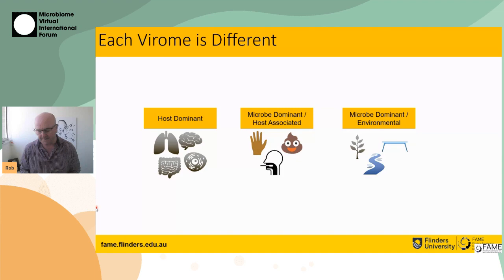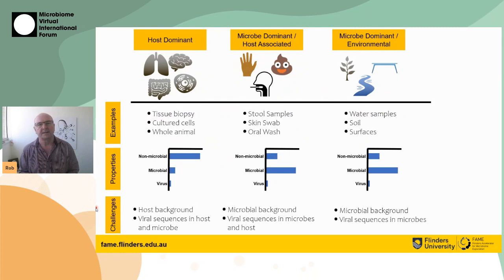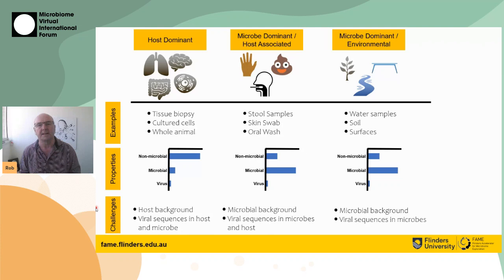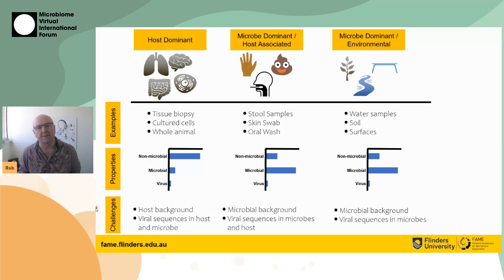For example, you might have a host-dominated virome. If you're taking a biopsy sample or a sputum sample, you're going to have a lot of host DNA that you need to process and remove. Many other samples have host DNA in them — for example fecal samples — but they're really dominated by bacteria. And if we go to more purely bacterial-dominant environments, we don't worry so much about the host. So before we begin any analysis, we need to think about what kind of sample we're looking at.